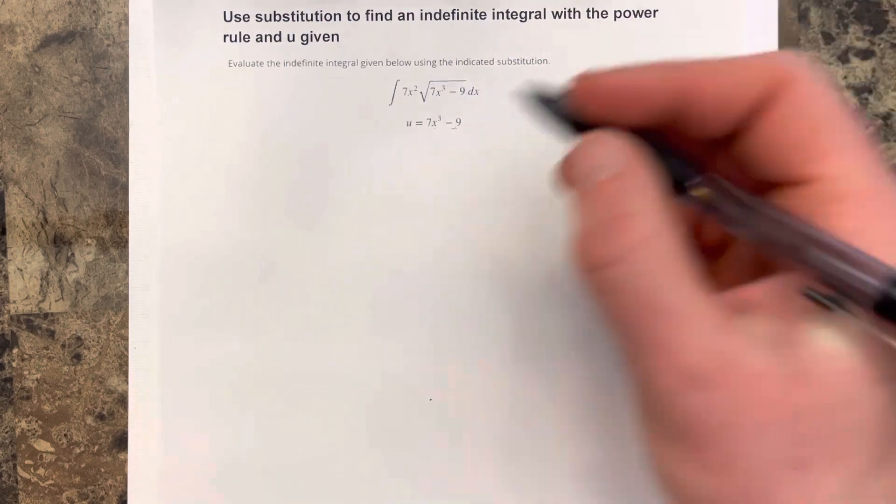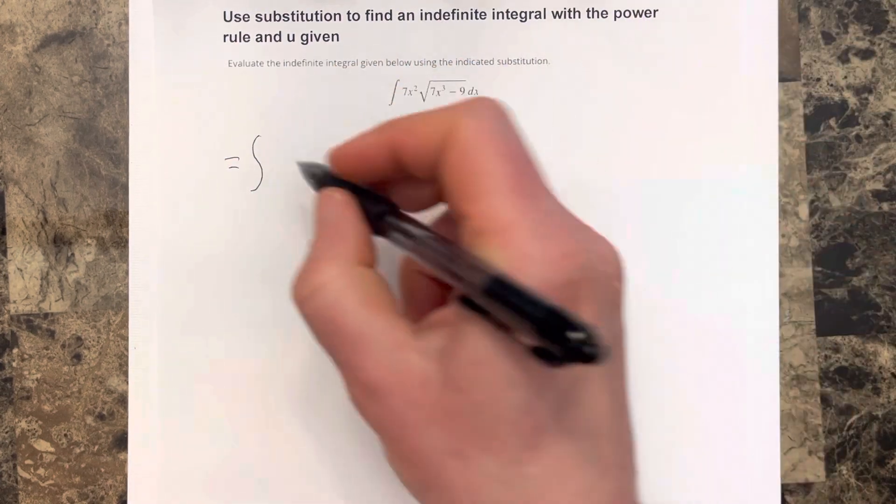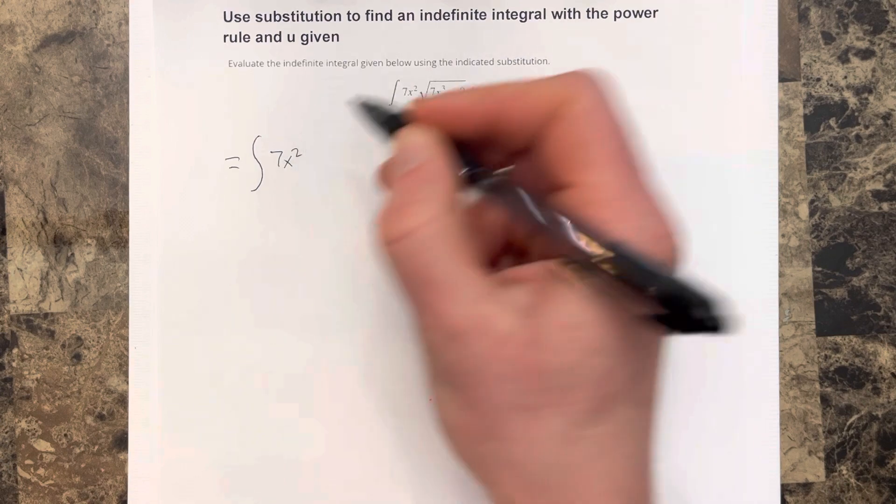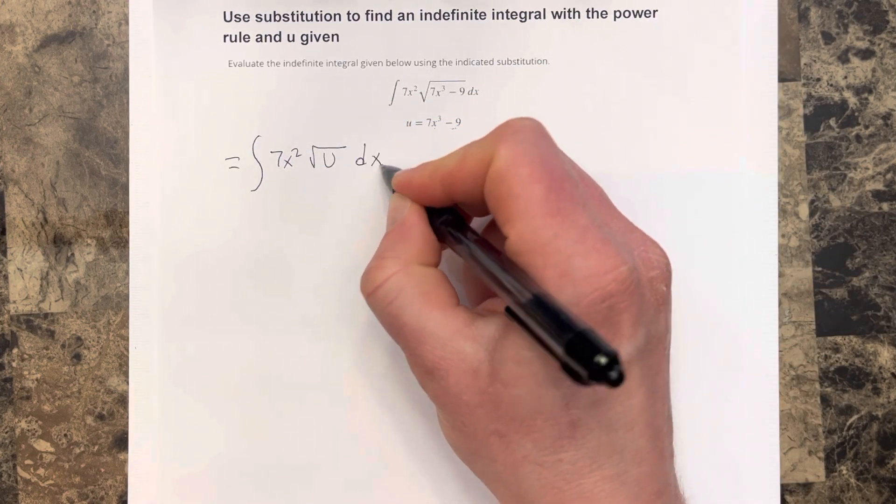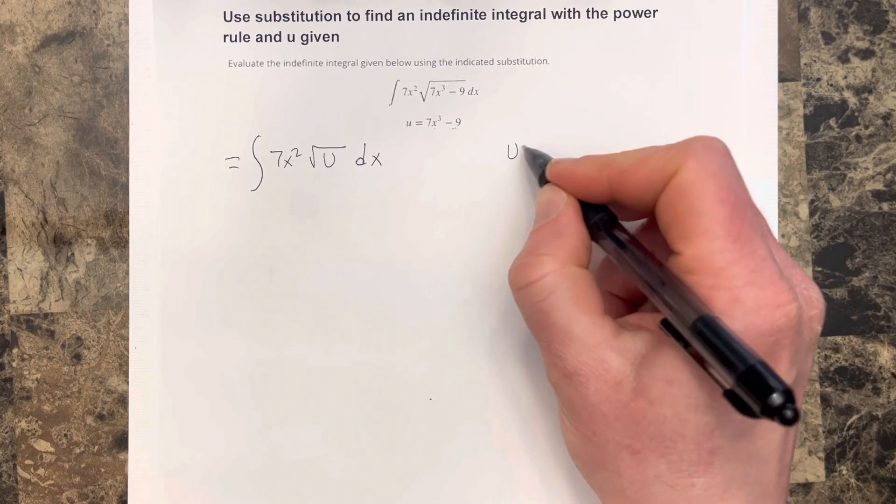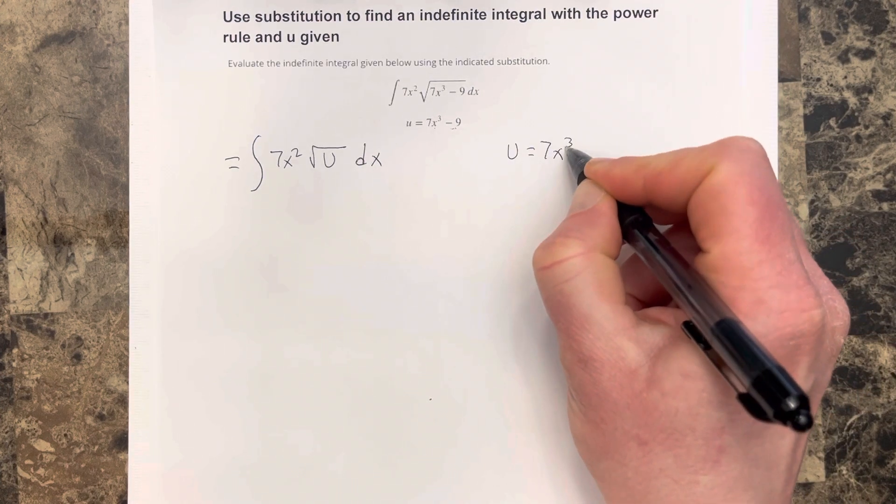So the first thing I'm going to do with this problem is I'm going to rewrite this integral of 7x squared root u dx. And then I'm going to write out here that u is equal to 7x cubed minus 9.